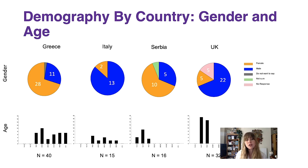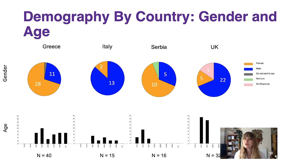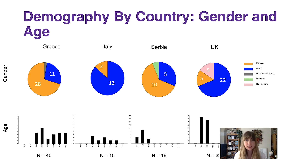And then finally, the UK — we had 32 students, 22 of these were male, so the majority were male, five were female and five did not respond. In terms of the age profile, we've got quite a narrow age profile in the UK sample, with all students falling within the 14 to 17 or the 18 to 21 categories.